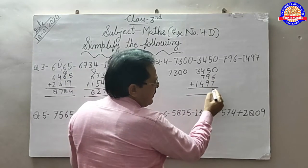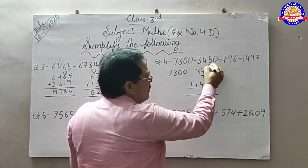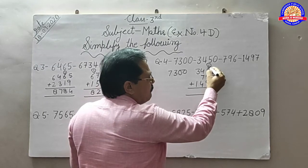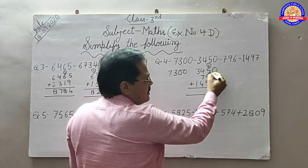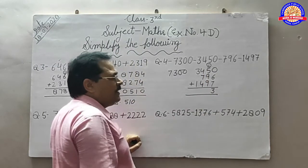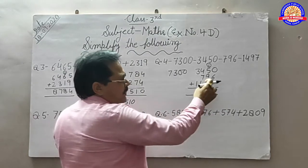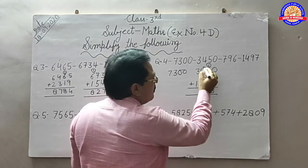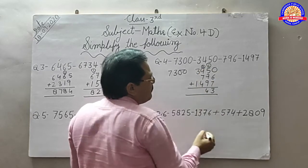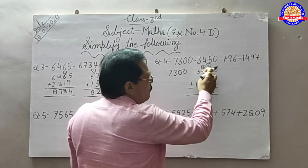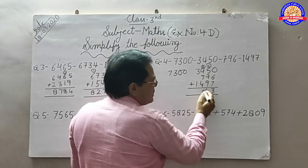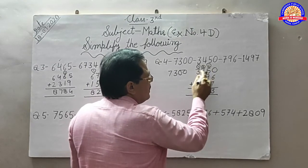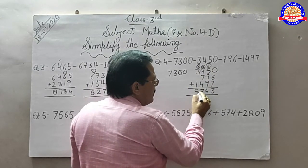6, 7 makes 13, carry 1. 1 plus 5 makes 6. Then 9 plus 15 makes 24. Write 4, carry 2. 4, 4, 8 plus 2 makes 10, then 17. Write 7, carry 1. 3, 1, 4, 1 makes 5.